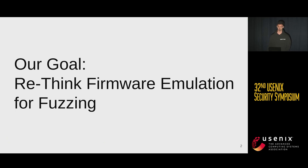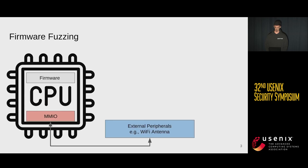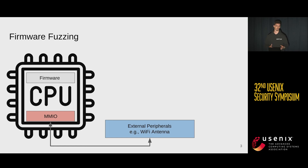Our goal today is to rethink firmware emulation for fuzzing. I'll start with a quick overview of how firmware fuzzing is conducted nowadays. Usually we have an embedded device with a CPU running some firmware, which is usually just a binary blob, flat in memory — no Linux or anything. We have some external peripherals we communicate with over MMIO.